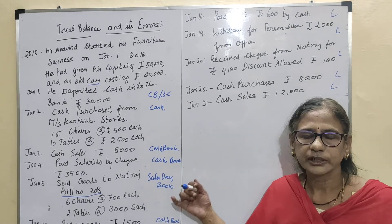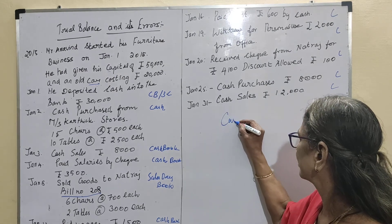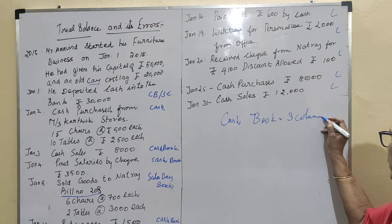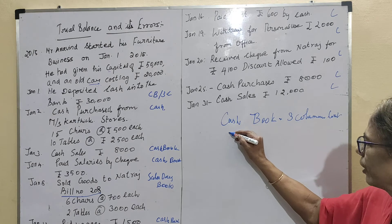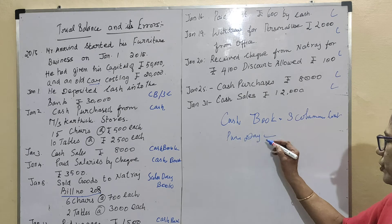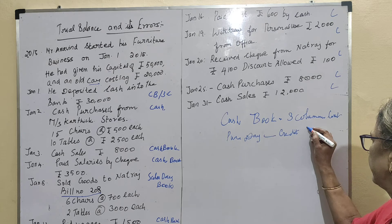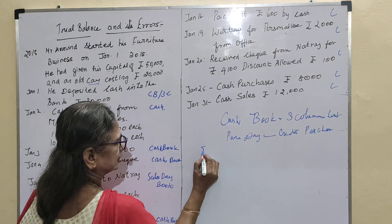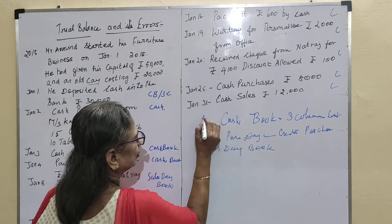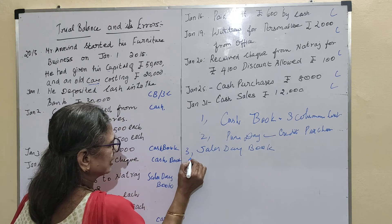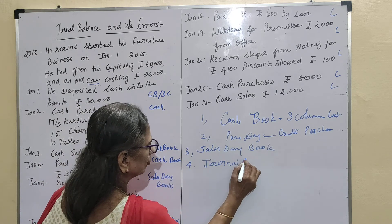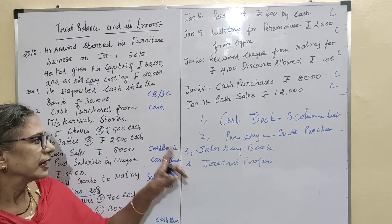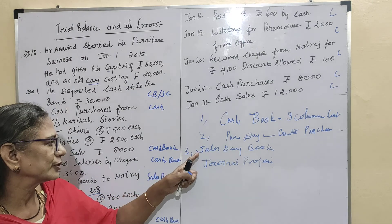We are going to use the three-column cash book, the purchase day book for credit purchases, and the sales day book for credit sales. We are also preparing a journal proper — because any capital received in the form of kind will be entered only in the journal proper. In the next video we are going to work out the cash book, purchase day book, sales day book, and journal proper.